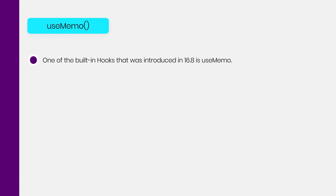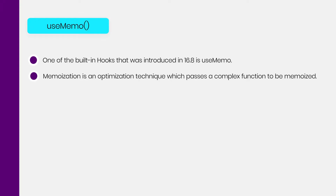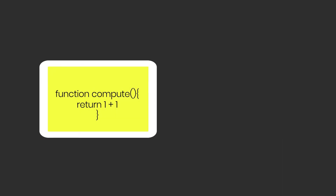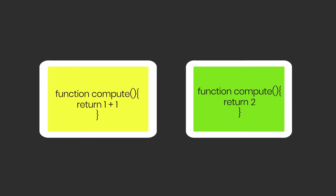So what is UseMemo? You can call it memoization. Memoization is an optimization technique which passes a complex function to be memoized. The result is remembered when the same parameters are passed in subsequently. For example, if you have a function that computes 1 plus 1, it will return 2. But if it uses memoization, the next time we run through the function, it won't add them up — it will just remember the number is 2 without executing the adding function. So it will save your time as well as memory.